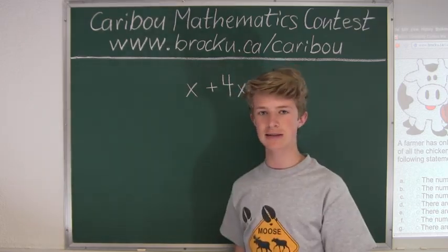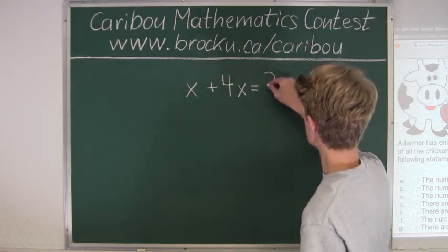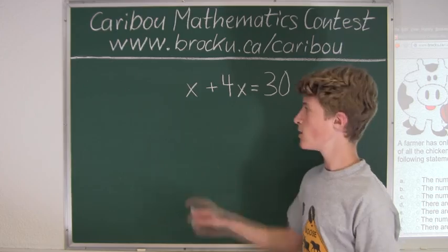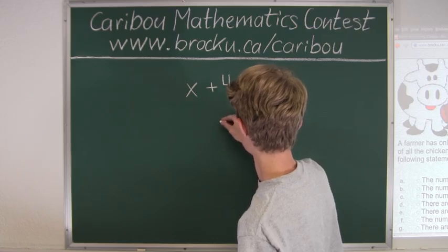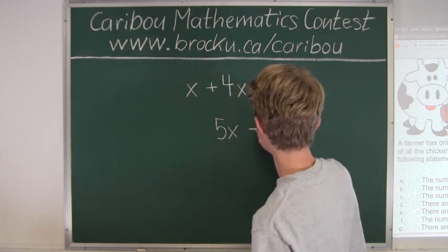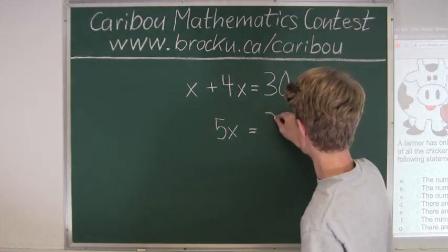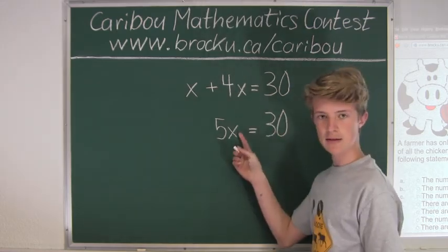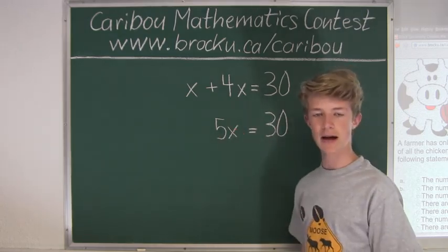And the question also states that in total there are 30 animals. So we know that x plus four x is five x. And then we have equals 30. So to get x we would divide both sides by five. So we have x equals six.